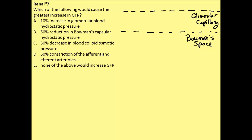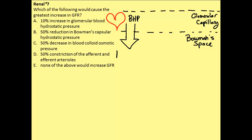First of all, we have a very generic representation of a heart, which would be pumping. This creates a pressure called the blood hydrostatic pressure. As that heart pumps, it is going to be pushing blood into our glomerular capillaries. This pressure is going to promote filtration — the movement of fluid from within the glomerular capillary and into Bowman's space, where it can then form urine.